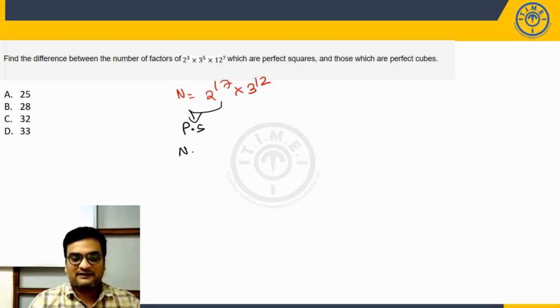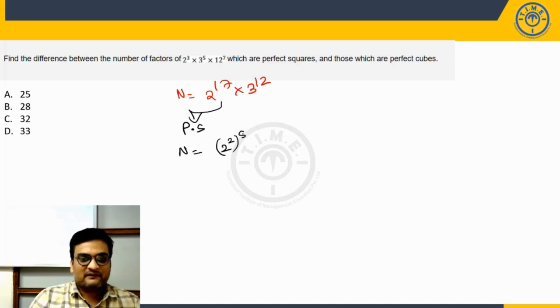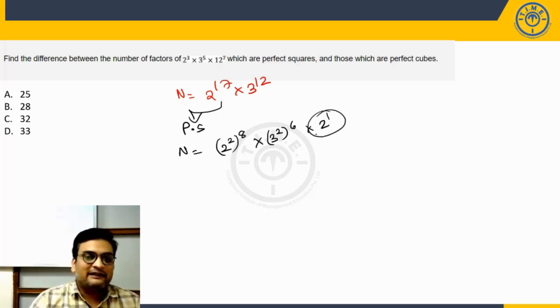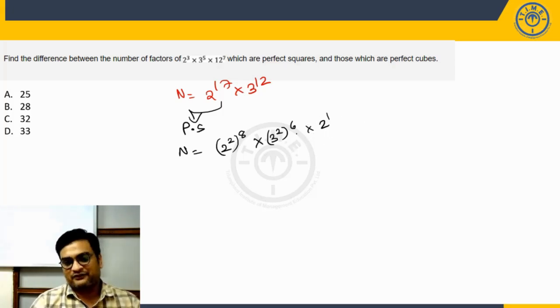So for perfect squares, the condition is the power should be even, that is the only condition. So let us try to apply that condition here. So 2 power 17 can I not write it down as 2 square whole power 8, right. And 3 power 12, I can write as 3 square whole power 6. And that 1, 2 which is left is written separately. The reason I am writing it separately is this 2 can anyways never form a perfect square. So we can just as well ignore it. This will not be considered in our calculations.